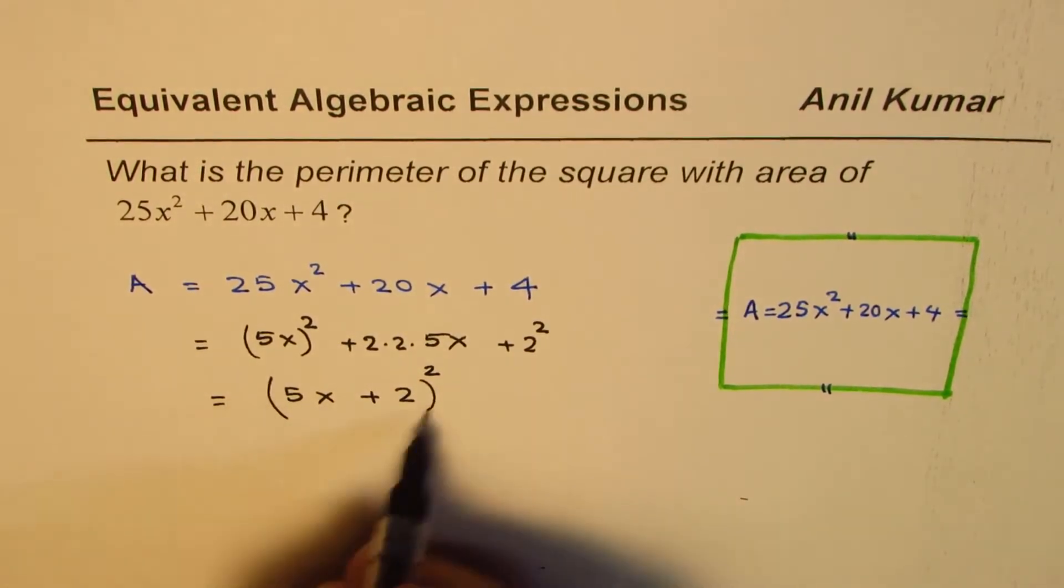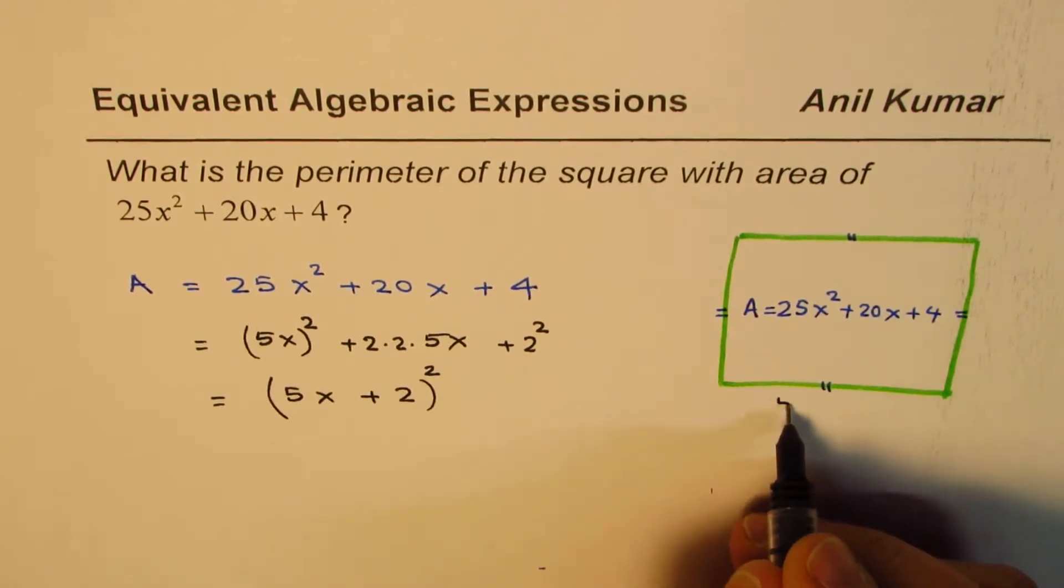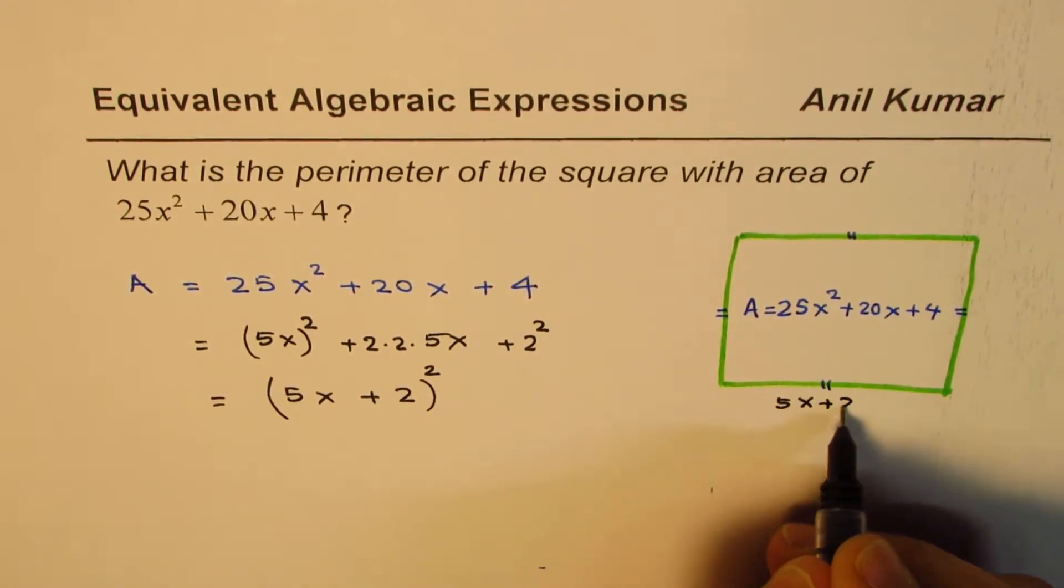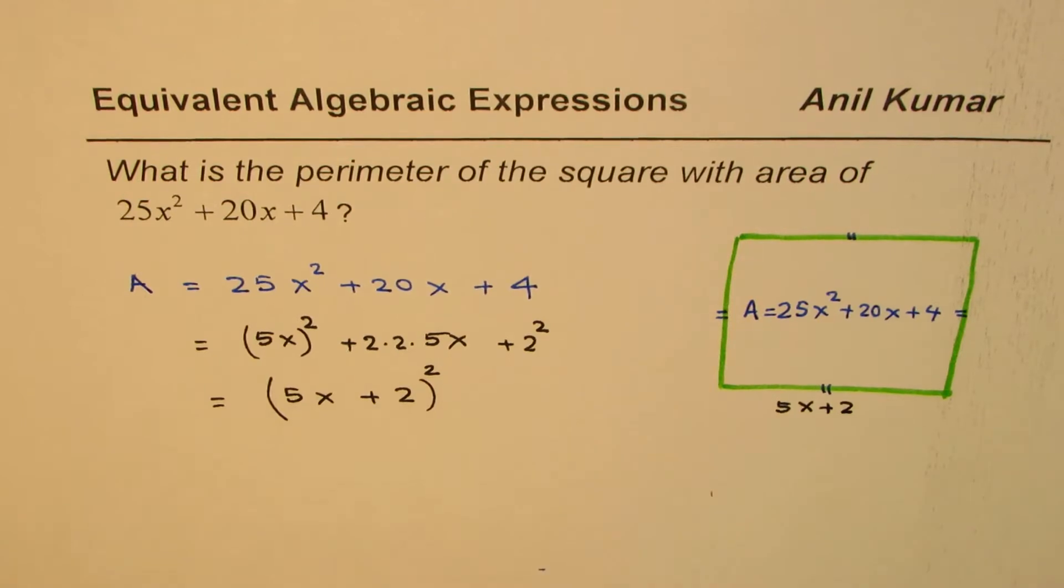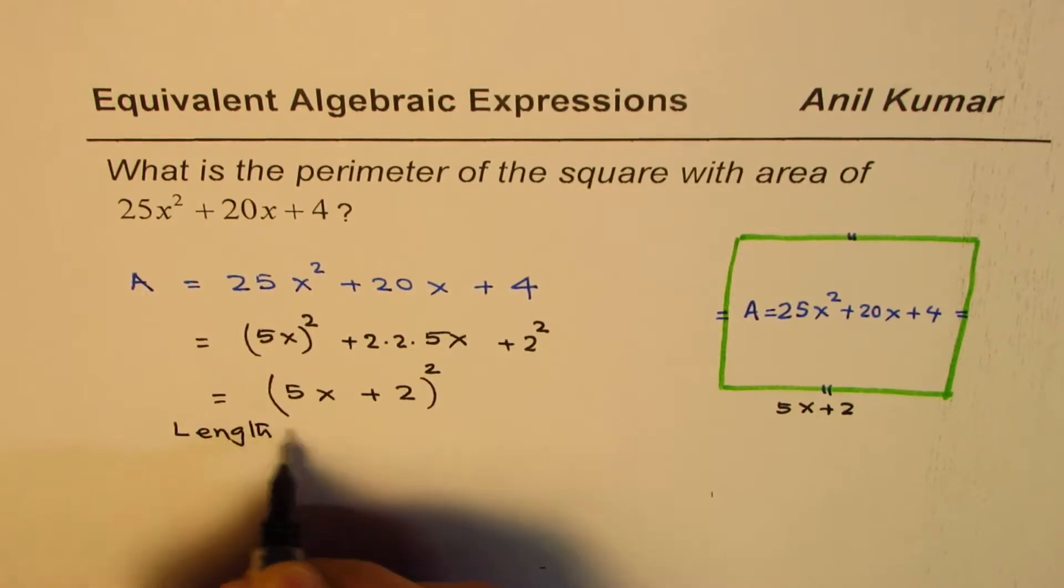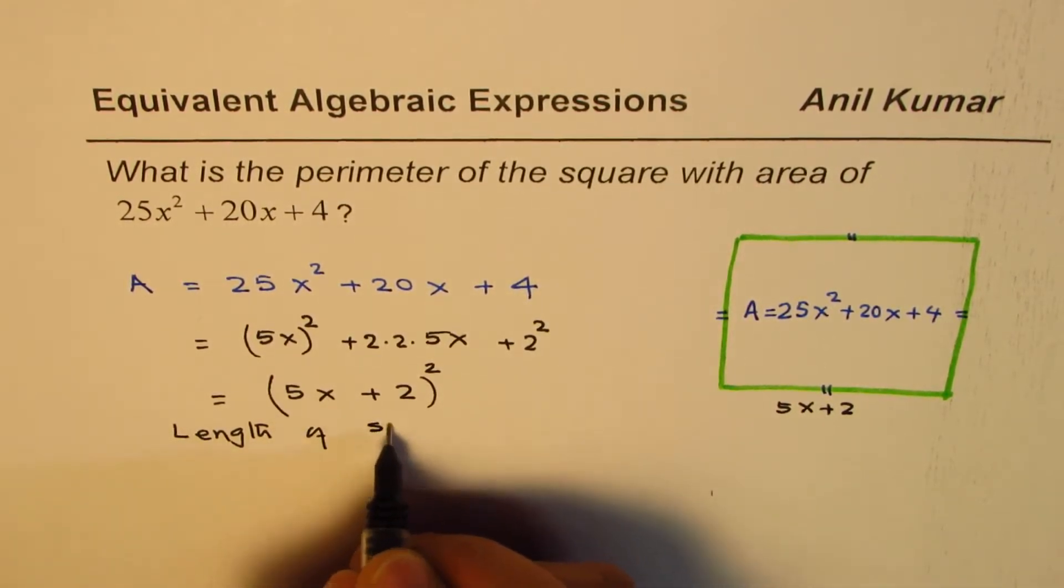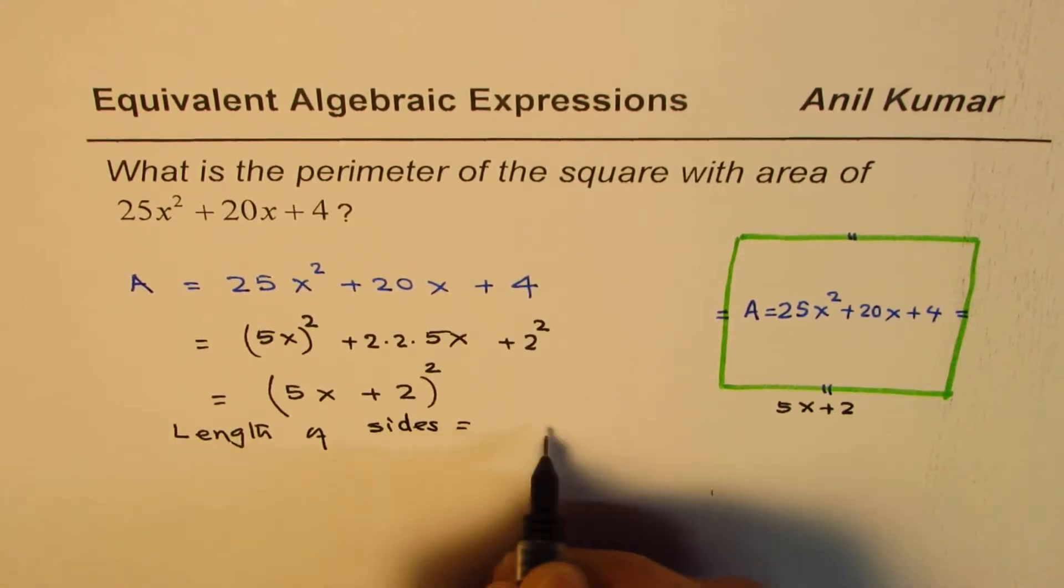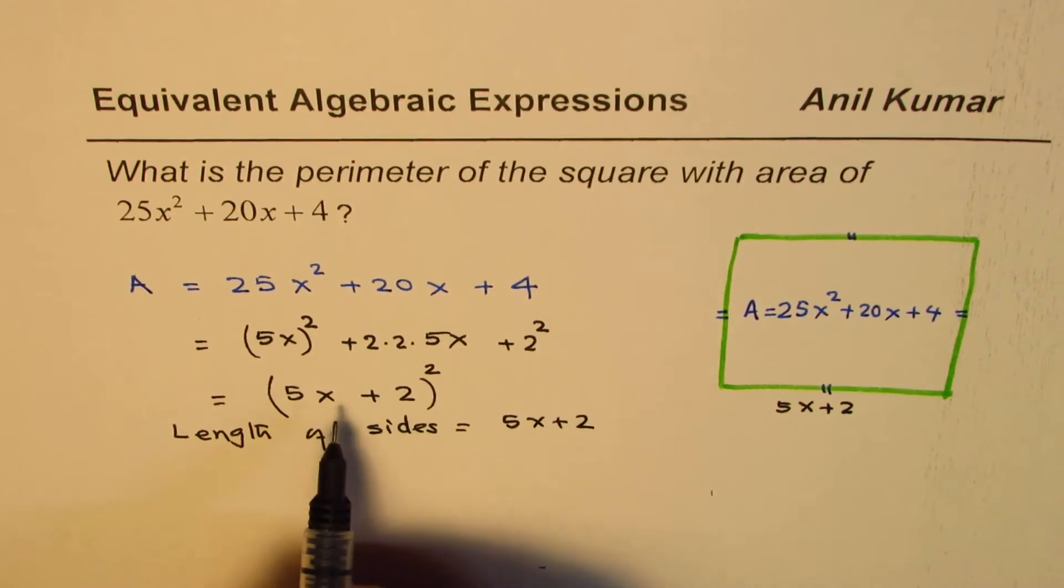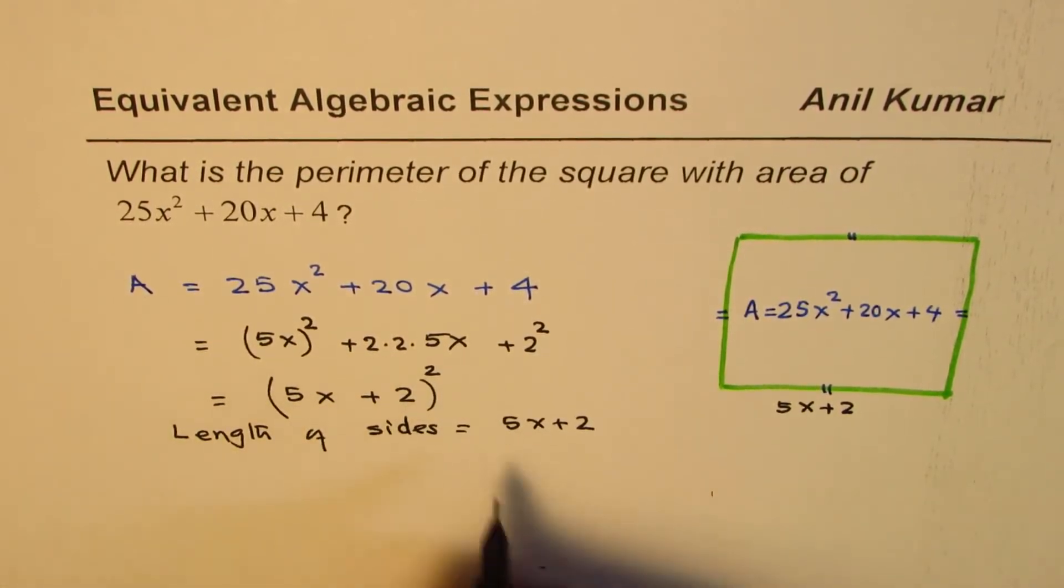It is a perfect square, which means that in this square, each side has a length of 5x + 2. That means the length of each side equals 5x + 2, because only then you get the area of (5x + 2)².